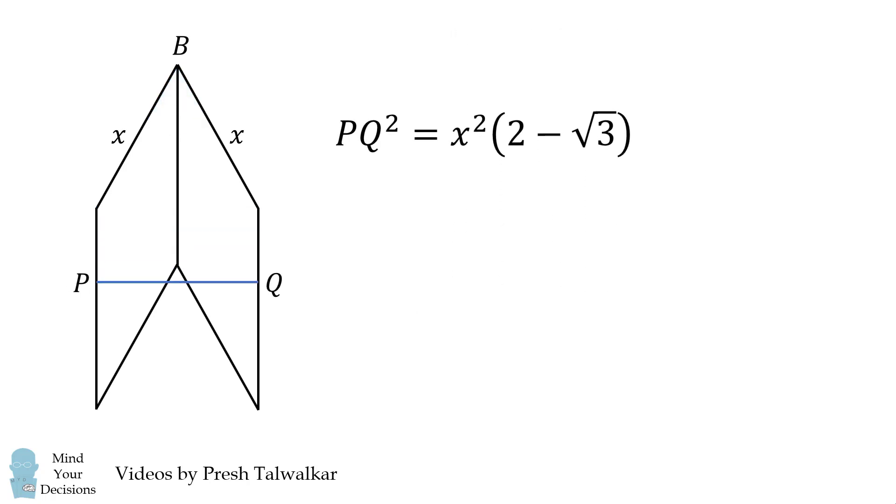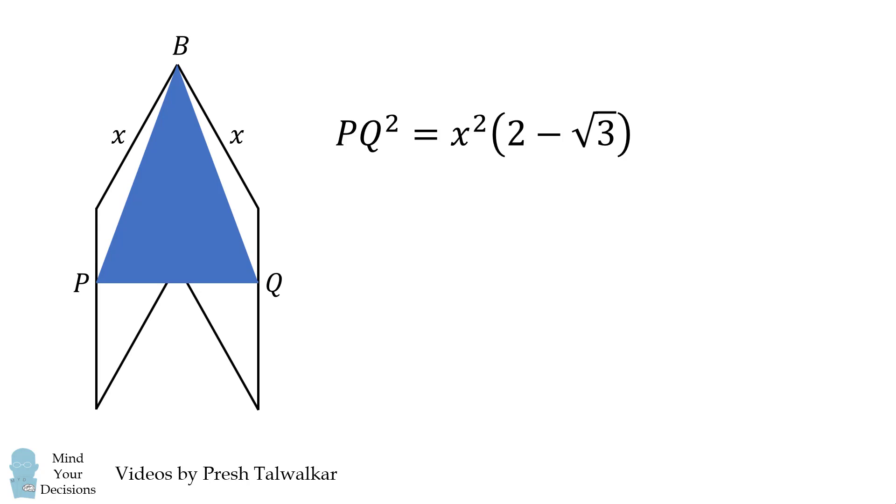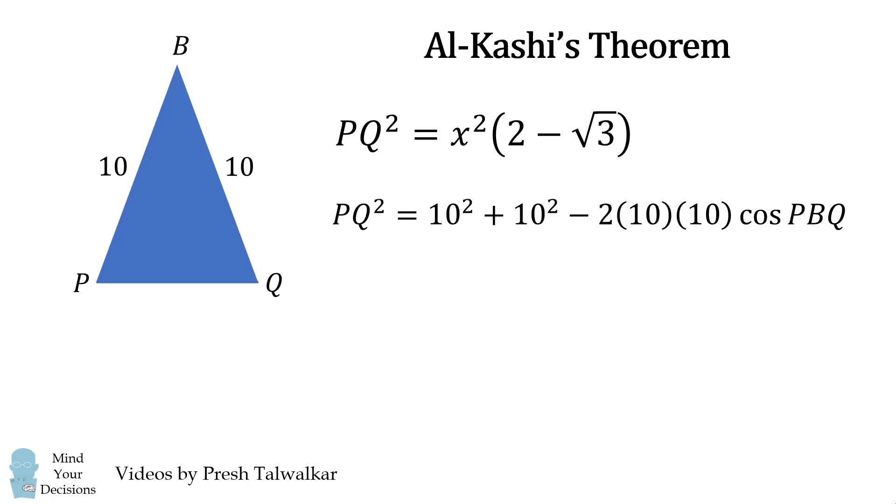We're now going to get another expression for PQ². Instead, we're going to use this triangle BPQ. Focus on just this triangle and recall that these lengths are 10. Using Al-Kashi's theorem, we get PQ² = 10² + 10² - 2·10·10·cos(PBQ). We then simplify this to get PQ² = 200 - 200cos(PBQ).